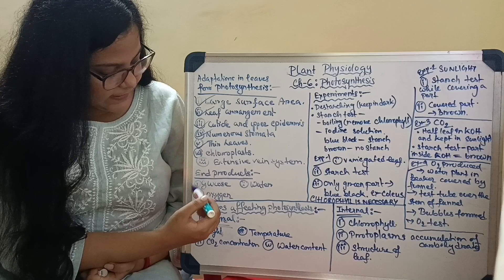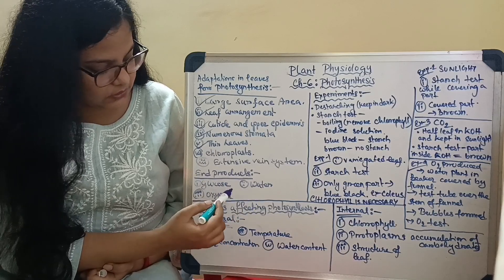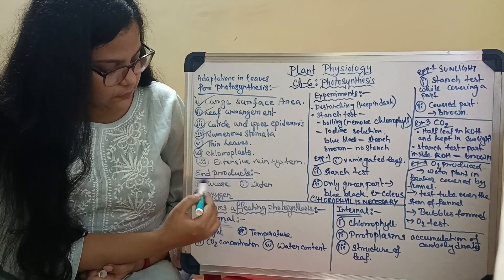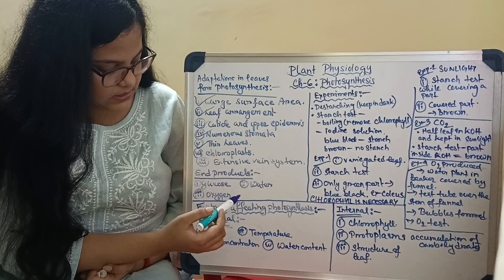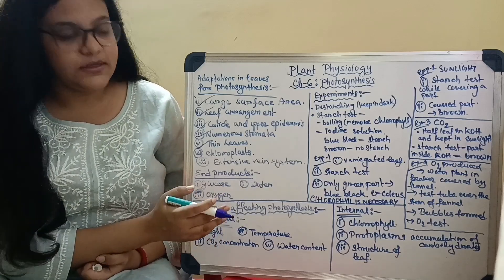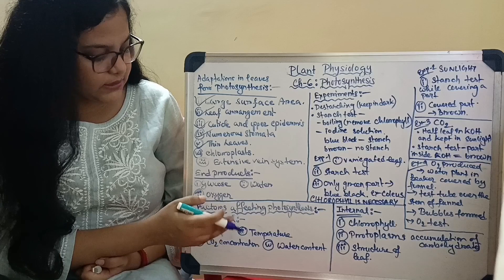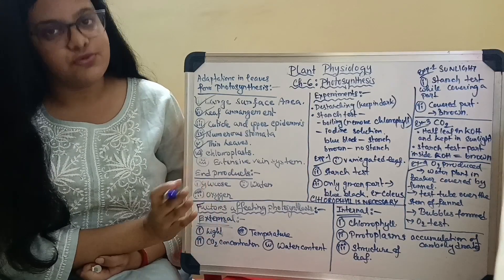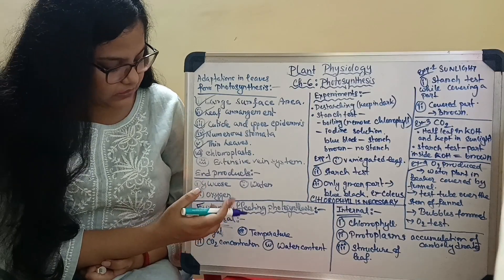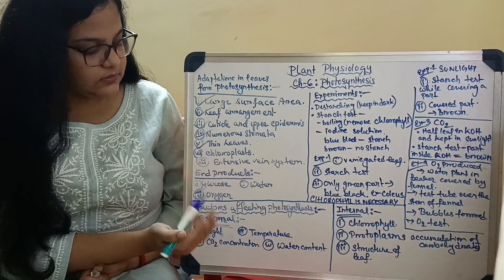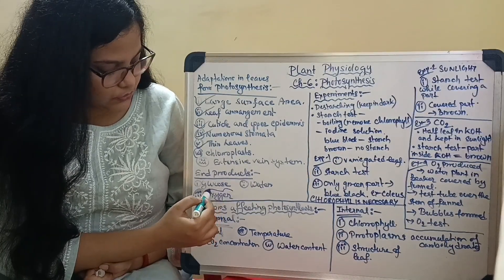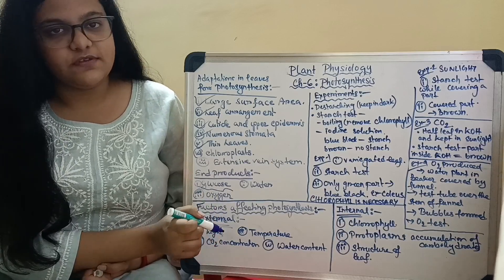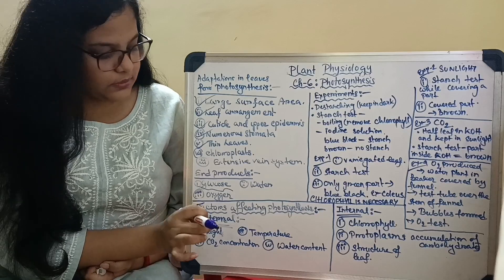Now what are the end products of photosynthesis? We all know those are glucose, water, and oxygen. The glucose formed in photosynthesis is sometimes used by the plant immediately or stored as insoluble starch. It can also be converted to support other functions in the plant. The glucose formed in the leaves is translocated to other parts of the plant through phloem in order to make the plant healthier and support life.